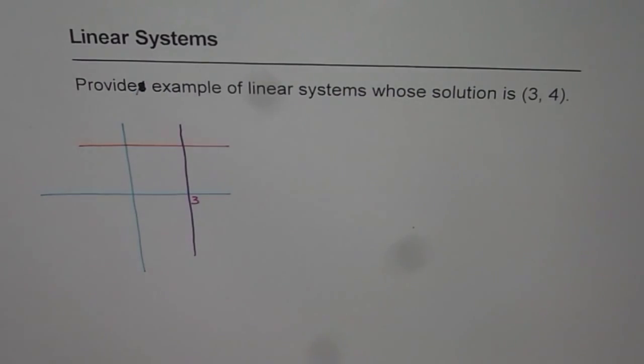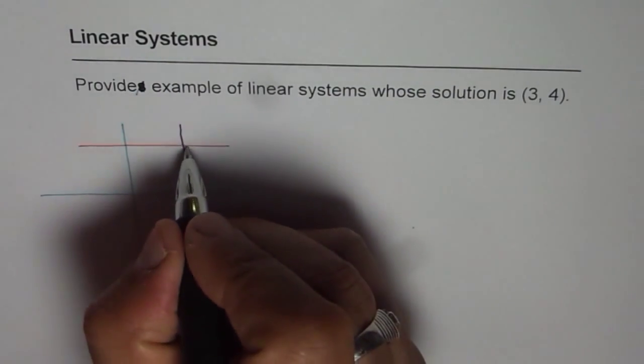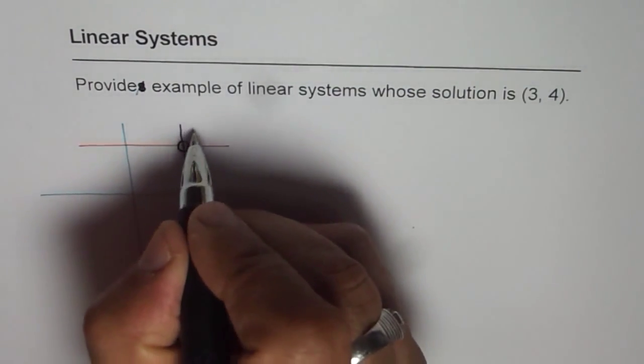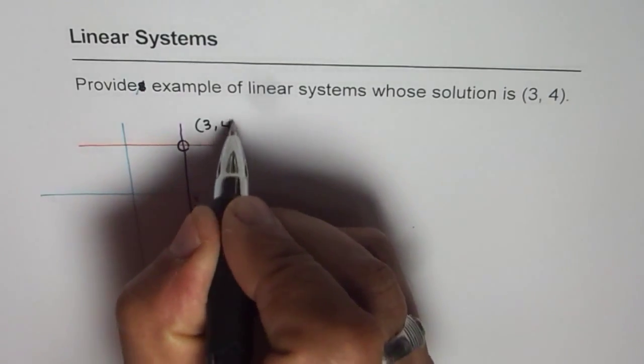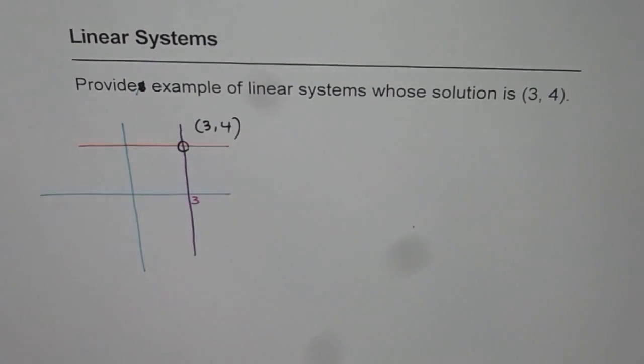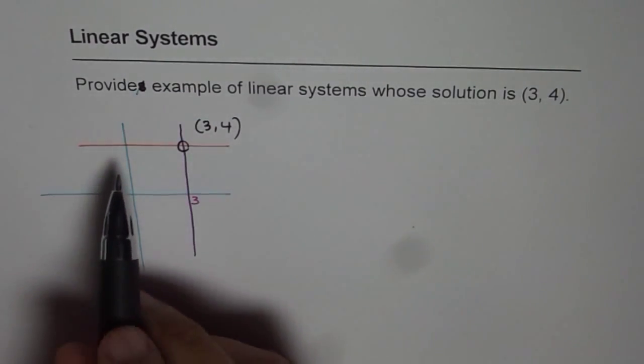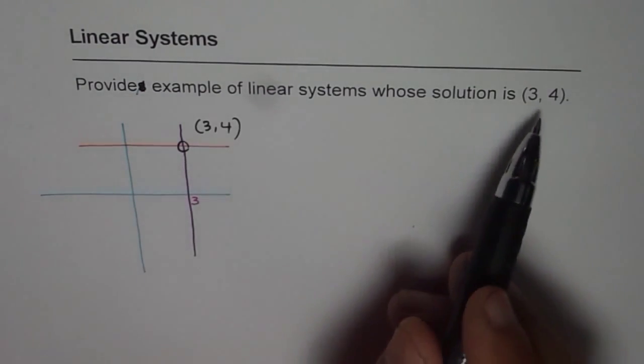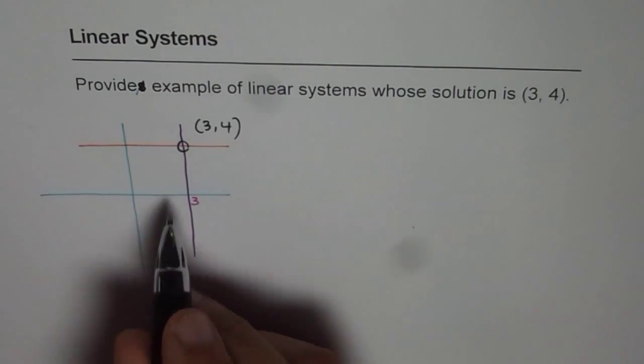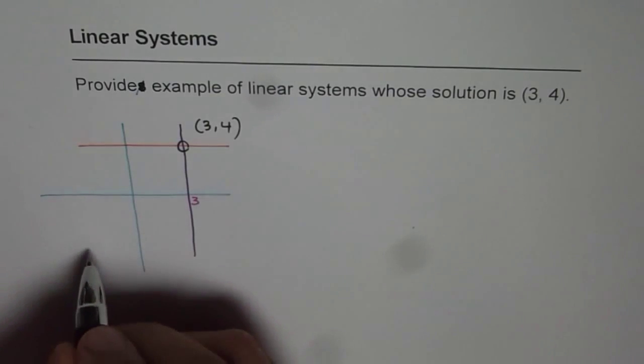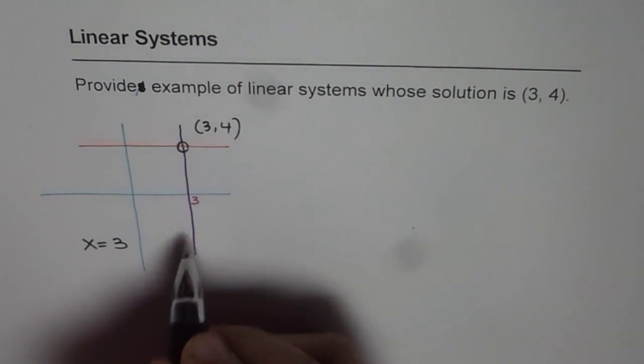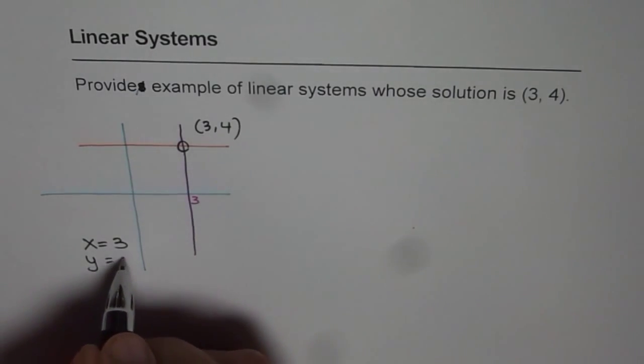these two lines will intersect and they will intersect at a point which is going to be (3, 4). So that is how we can get a linear system with this solution, right? So our linear system shown here is x equals to 3, that is the vertical line, and y equals to 4.